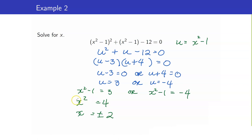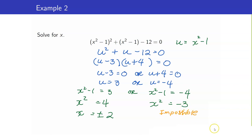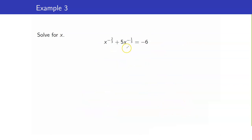For the other case, x² - 1 = -4 gives x² = -3. The square of a number cannot equal a negative number, so this is impossible — no real solution. Therefore, the only solutions are x = ±2.